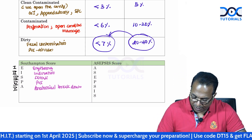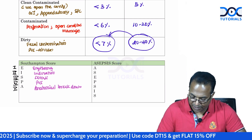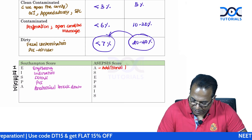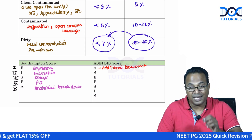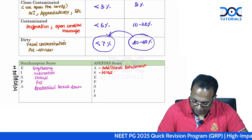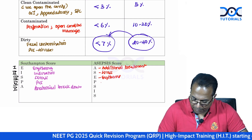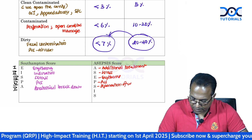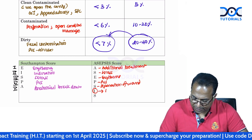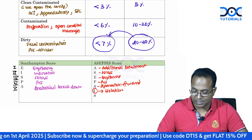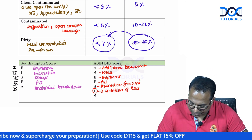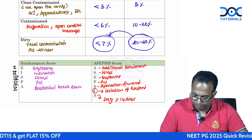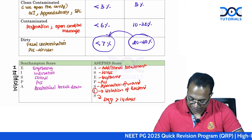The ASEPSIS score is given by the mnemonic ASEPSIS from Bailey itself. A for additional treatment needed — for example, wound debridement or cleaning. S for serous discharge. E for erythema. P for pus. S for separation of wound, like breakdown of the wound. Very importantly, I does not stand for induration here — it stands for isolation of a bacteria in pus culture sensitivity. And S stands for stay more than 14 days in hospital because of the infection.